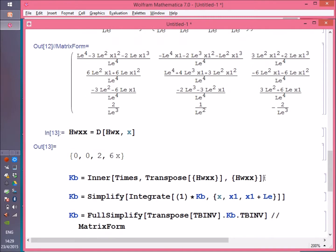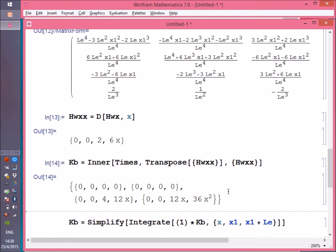So now I'm telling Mathematica that I want to do an inner multiplication between the two vectors, hwxx and itself. This is going to be the column vector, and this is going to be the row vector to end up with the matrix. When we perform the multiplication, this is what you're going to get.